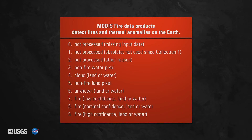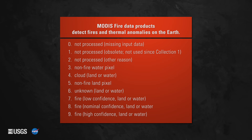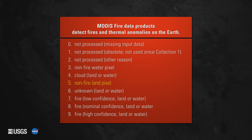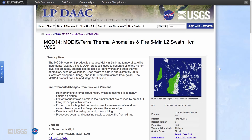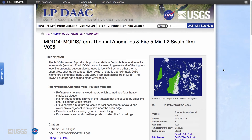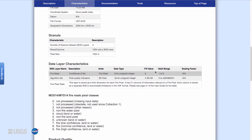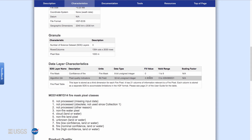MODIS thermal anomalies and fire data provides information on active fires using an index that flags if fire was currently burning at the time of acquisition. This index is offered as a fire mask that provides classes based on values of 0 to 9. These classes show where a fire was detected and also classify the surrounding area as water, cloud, or land. To learn more about specific fill values and valid ranges for the various MODIS version 6 fire products, please see the digital object identifier or DOI landing pages on the LPDAAC website at lpdaac.usgs.gov.